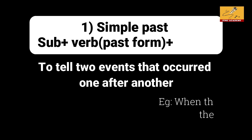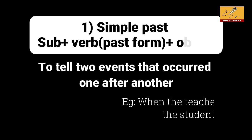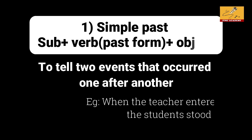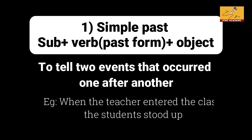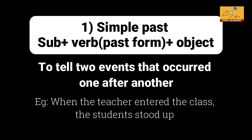We also use simple past when two events happen sequentially. For example: 'When the teacher entered the class, the students stood up.' Two past events — the teacher entering is one event, the students standing is another.